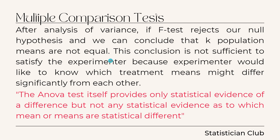This conclusion is not sufficient to satisfy the experimenter, because the experimenter would like to know which treatment means might differ significantly from each other. Suppose that your alternative hypothesis is mu1 ≠ mu2 ≠ mu3 ≠ mu4. So when you accept your alternative hypothesis, you only have one answer — that your means are not equal. Which means differ from which, you cannot know.